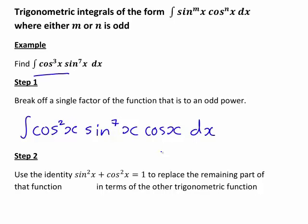Now the next step is we then use the well-known identity sin squared x plus cos squared x equals 1 to replace the remaining part of that function, that is the part of cos x that we have left here once we've broken off the single factor, in terms of the other trigonometric function, which will be in terms of sin x in this example.